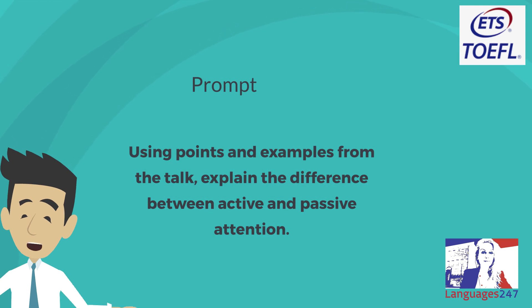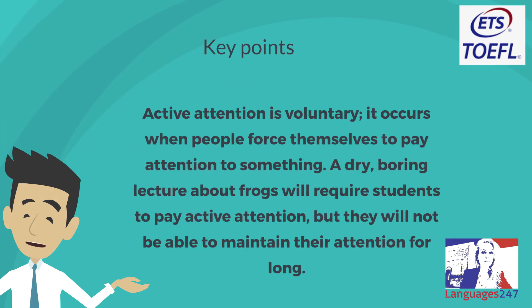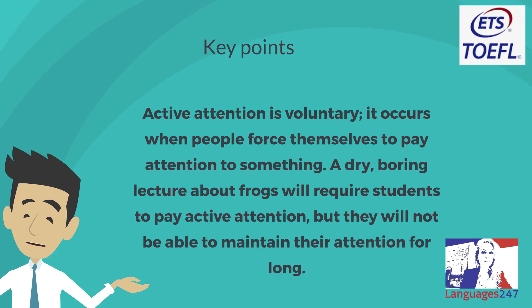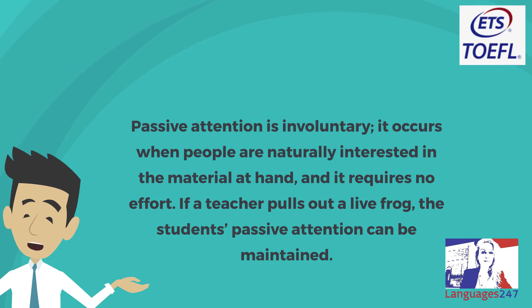Prompt: Using points and examples from the talk, explain the difference between active and passive attention. Key points: Active attention is voluntary — it occurs when people force themselves to pay attention to something. A dry, boring lecture will require students to pay active attention, but they will not be able to maintain their attention for long. Passive attention is involuntary — it occurs when people are naturally interested in the material at hand and requires no effort. If a teacher pulls out a live frog, the students' passive attention can be maintained.